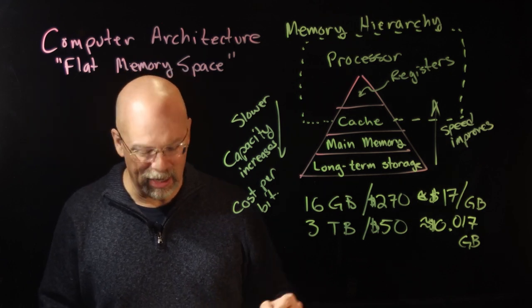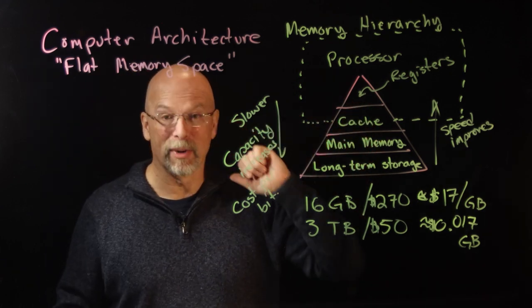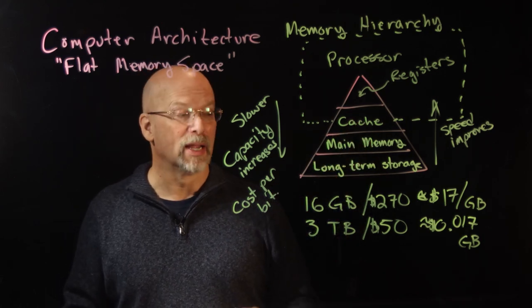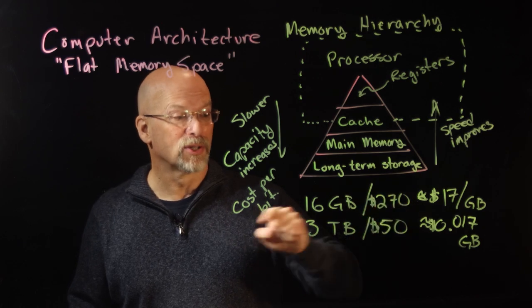People often talk about the technology that's being used to store something in a RAM cache. Why don't we use the same technology—since the RAM caches are so much faster—why don't we use the same technology for main memory?